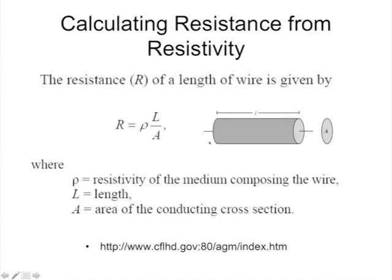We can also go the other way and calculate the resistivity by taking the resistance R in ohms and multiplying by A and dividing by L. That way we get the resistivity property measurement.